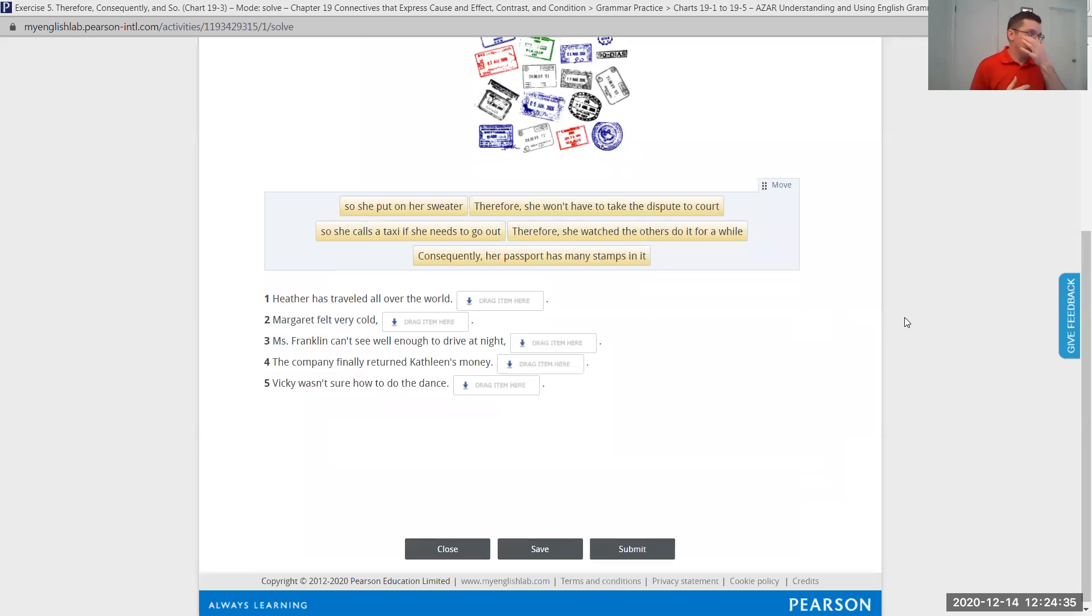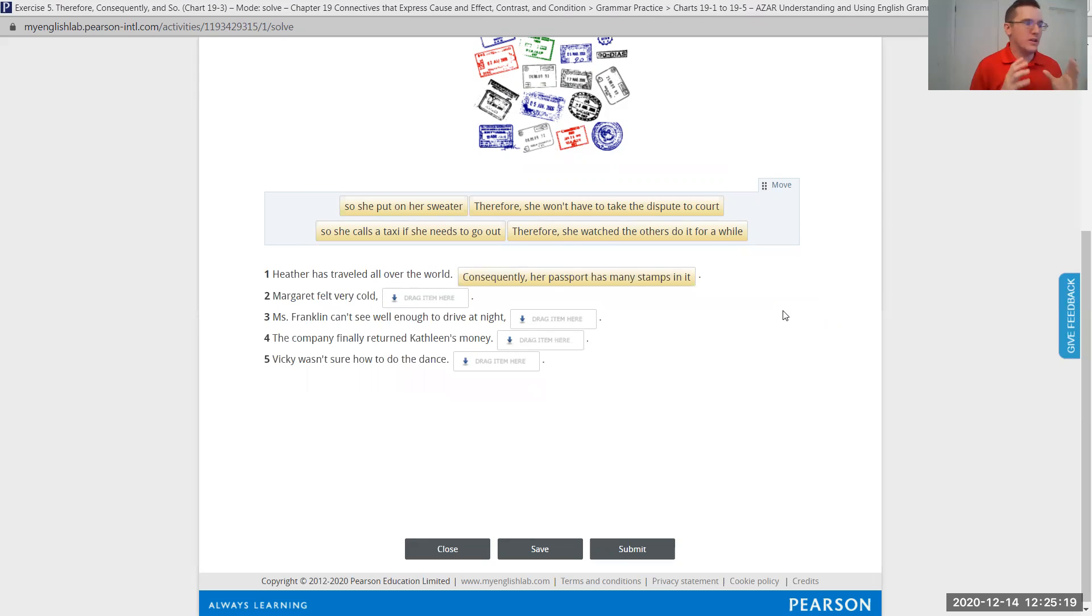Let's practice. We'll look at some examples. In number one through five, you're given the cause, the situation. Fill in the blank with the appropriate effect. What is the result? Number one, Heather has traveled all over the world as a result of her travels. What is the result? She put on a sweater. She won't have time to take the dispute to court. She calls a taxi if she needs to go out. She watched the others do it for a while. Her passport has many stamps in it. I think if she's a traveler, she's going to have a lot of stamps in her passport. So here again, consequently is your transitive adverb. Pause the video now, read number two through five, and match cause and effect. Match the first situation with the result.